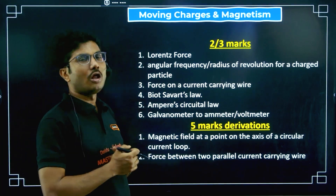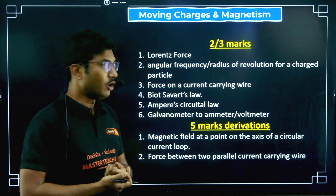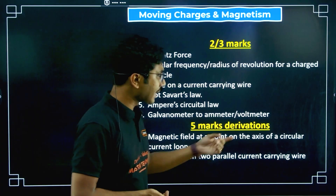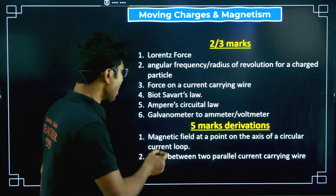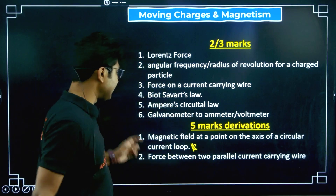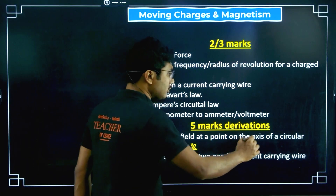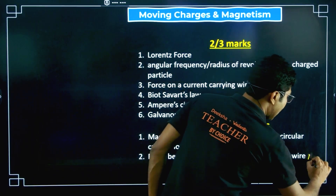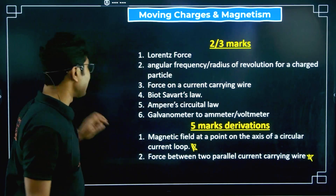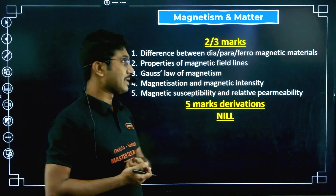Small numerical questions based on galvanometer conversions can also come. For five-mark derivations: magnetic field due to a point on the axis of a circular current loop is a very very important derivation, and force between two parallel current-carrying wires is also very very important. Both derivations are very very important and might come in your midterm exam. Let me know if you face any one of these derivations in your upcoming exam.